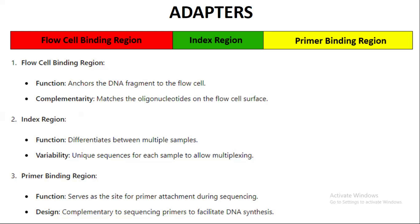The third and very important part is the primer binding region. The primer binding region serves as a site for primer attachment during sequencing. When we start sequencing, there should be a region where the primer can bind, and after that DNA polymerase starts sequencing. Without adapters, sequencing cannot be performed. These adapters are short nucleotide sequences or strands designed by us to manage the sequencing technology.